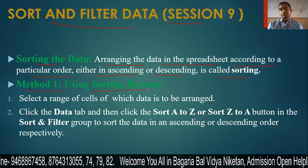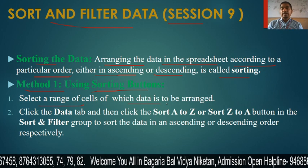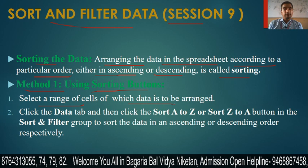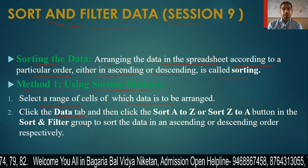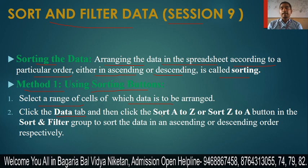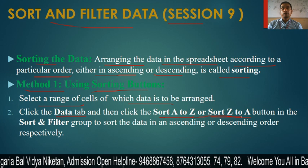First, select the range of cells whose data is to be arranged. Then click on the Data tab. You will find the Sort A to Z and Sort Z to A buttons in the Sort and Filter group on the Data tab.